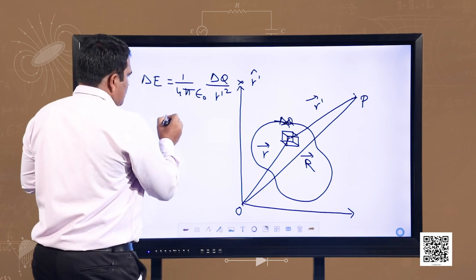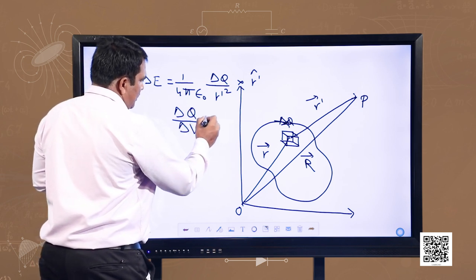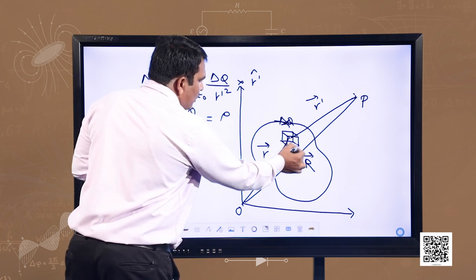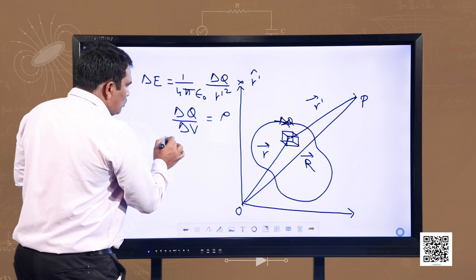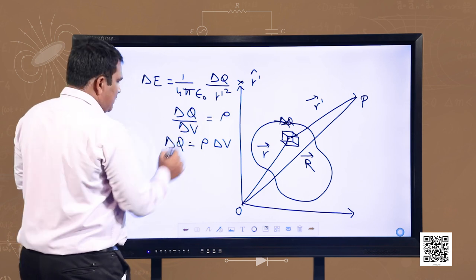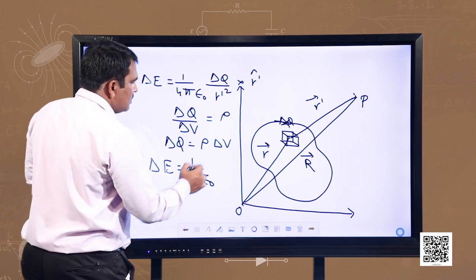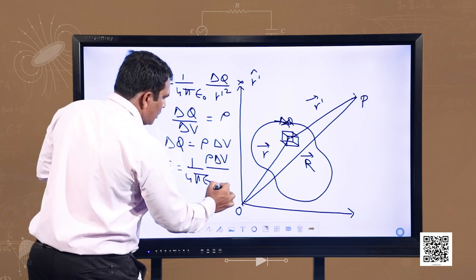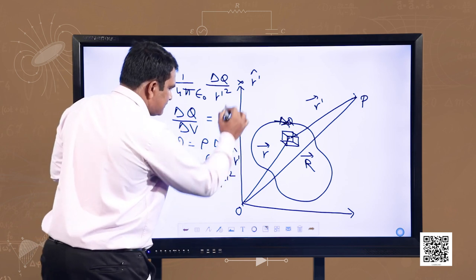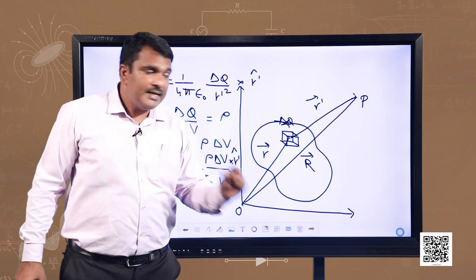Now, we know that delta q upon delta V equals volume charge density rho. So delta q equals rho times delta V. Substituting the value of delta q, we get delta E equal to 1 over 4π epsilon₀ times rho delta V divided by r dash squared, multiplied by r dash cap. This is the electric field at point P due to the charge contained in this small volume element.